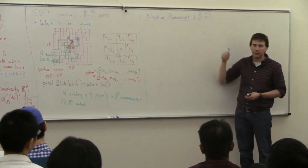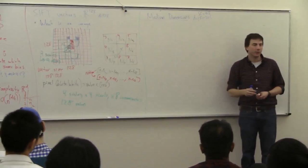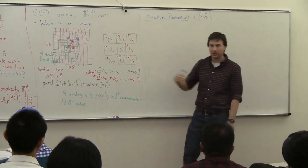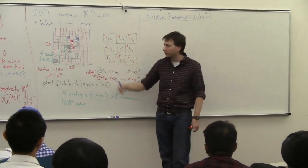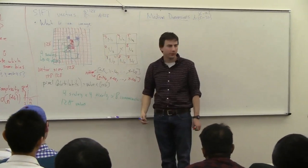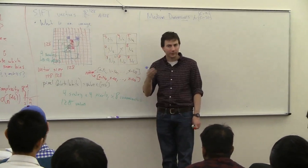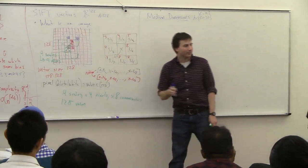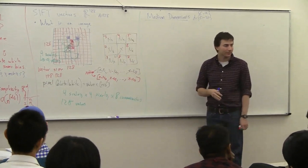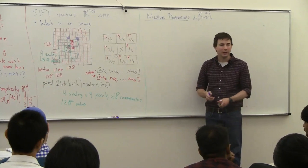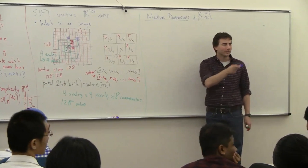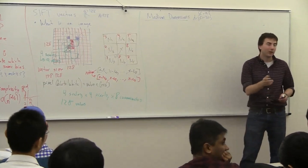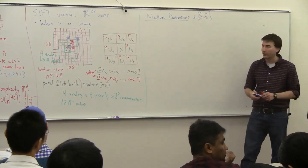Think of it in 5 dimensions. What data structure would you use for nearest neighbors? Someone mentioned a quadtree or a KD-tree.